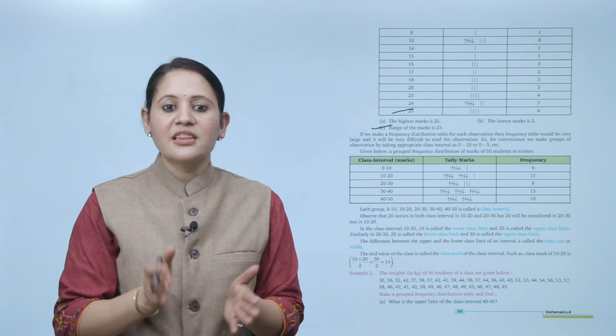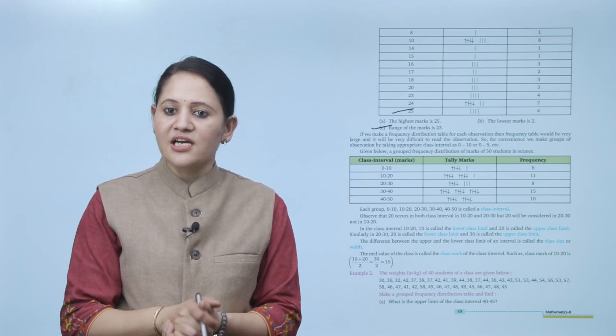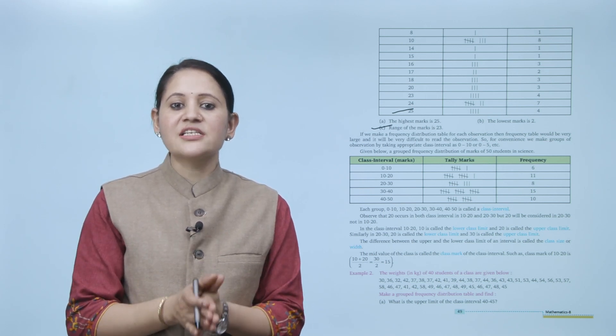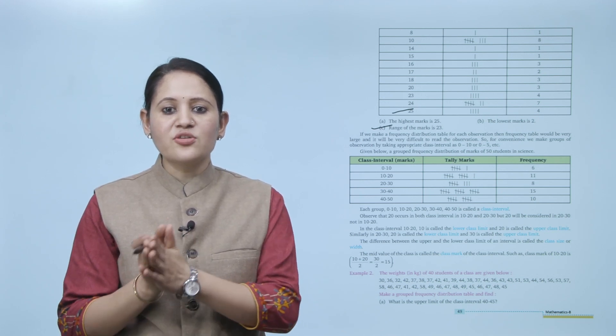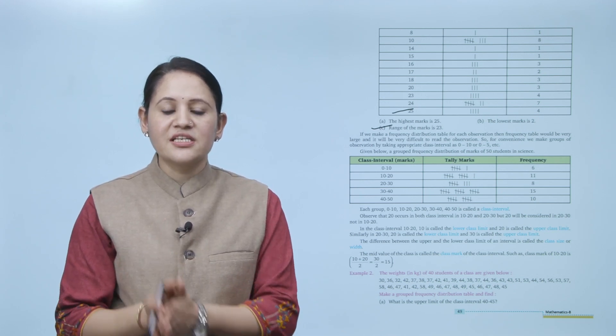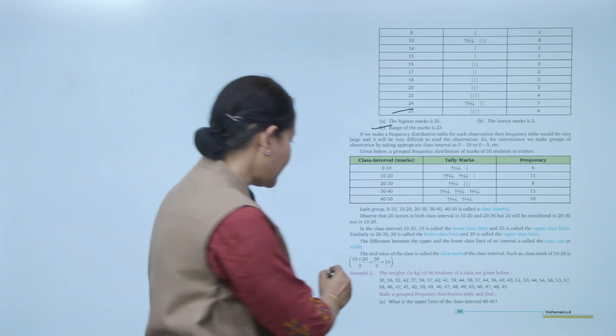The difference between the upper and lower class limit of an interval is called the class size or width. The mid value of a class is called the class mark of the class interval. For example, the class mark of 10–20 is (10 + 20) / 2 = 30 / 2 = 15.